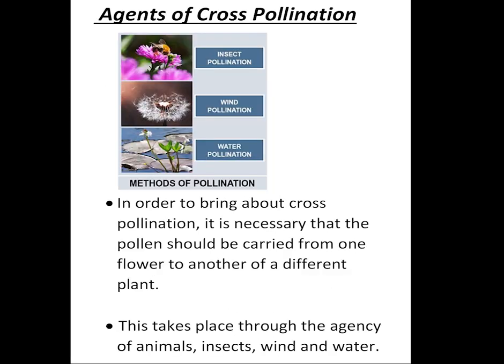Today, we are going to learn about agencies of cross-pollination. What are the agents of cross-pollination? You already studied that insects like honeybees, wasps, birds, bats, wind and water are some of the agents of cross-pollination. Cross-pollinated flowers depend on the external agencies for pollination. Now, we are going to learn some of the agents for pollination and the adaptation of cross-pollinated flowers.